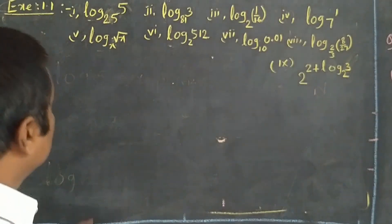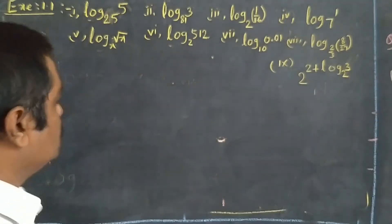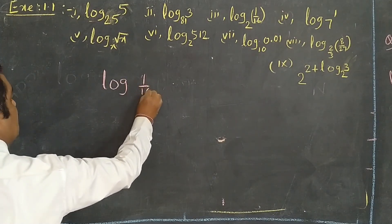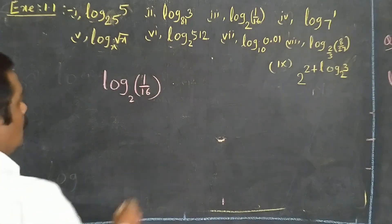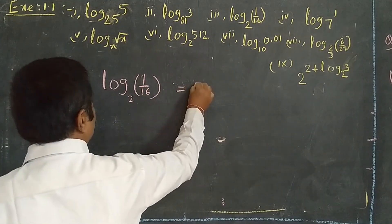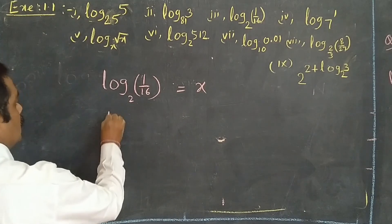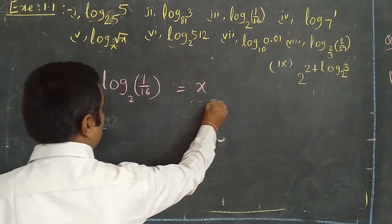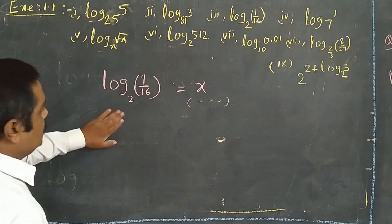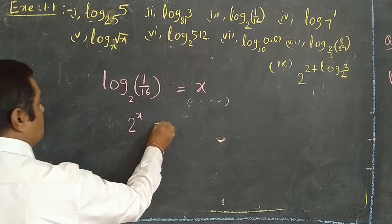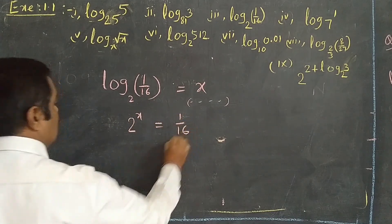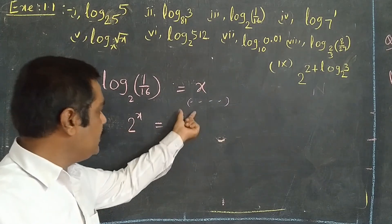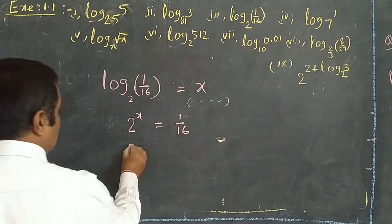Next, the third question: log(1/16) base 2. This is also equal to x. You have to convert to exponential form, which means 2^x = 1/16. We have to change it to the same base. Here 2 is the base, and we need 2 as the base on the right side as well.